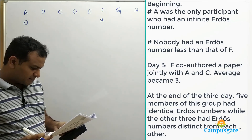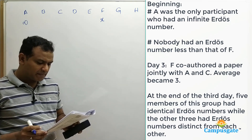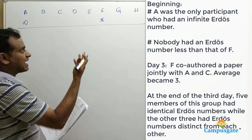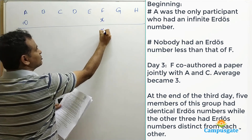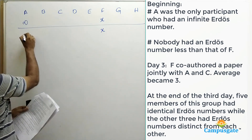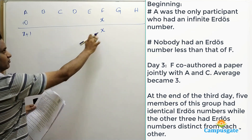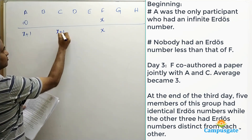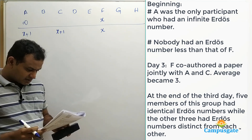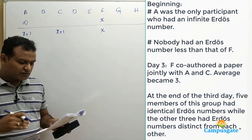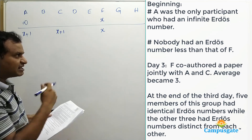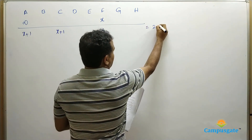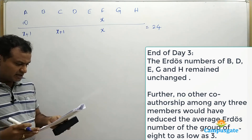On the third day of the conference, F co-authored a paper jointly with A and C. So what happens to their Erdős numbers? F has got the minimum Erdős number, so it won't change. But A's infinity will change to X plus 1, because he is directly connected with F who has value X. Similarly, C's value also changes to X plus 1. It is given that this reduced the average Erdős number of the group of 8 mathematicians to 3, so the sum equals 3 times 8, which is 24.